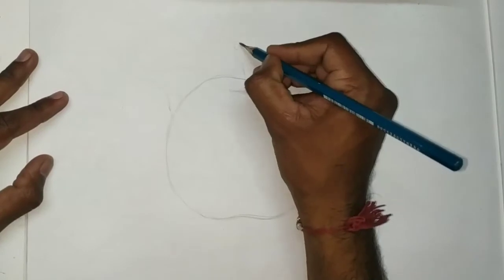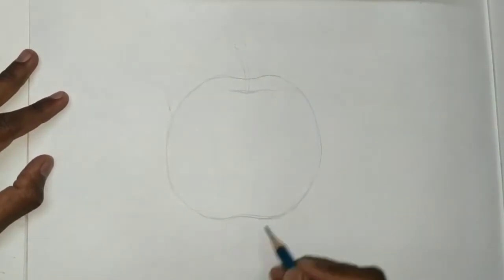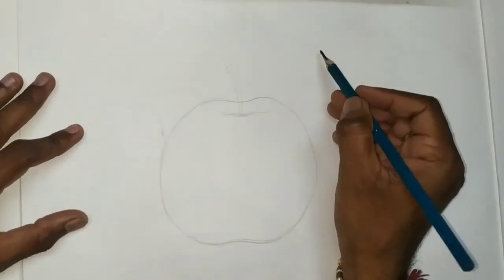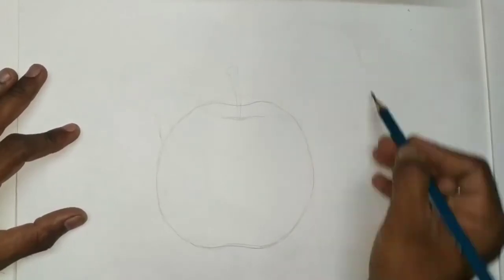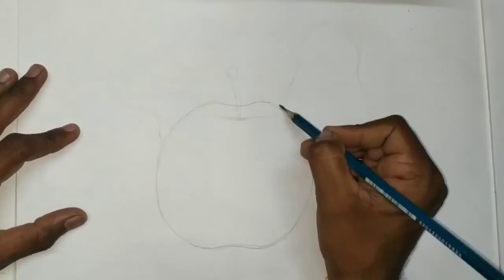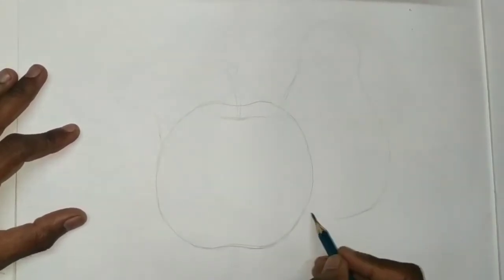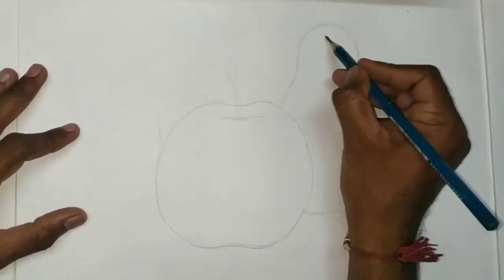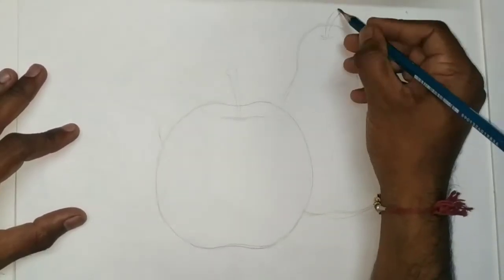At first we will draw with pencil. Pencil's outline is ready. Now one circle, small circle, then curve and this is our second fruit, pear.